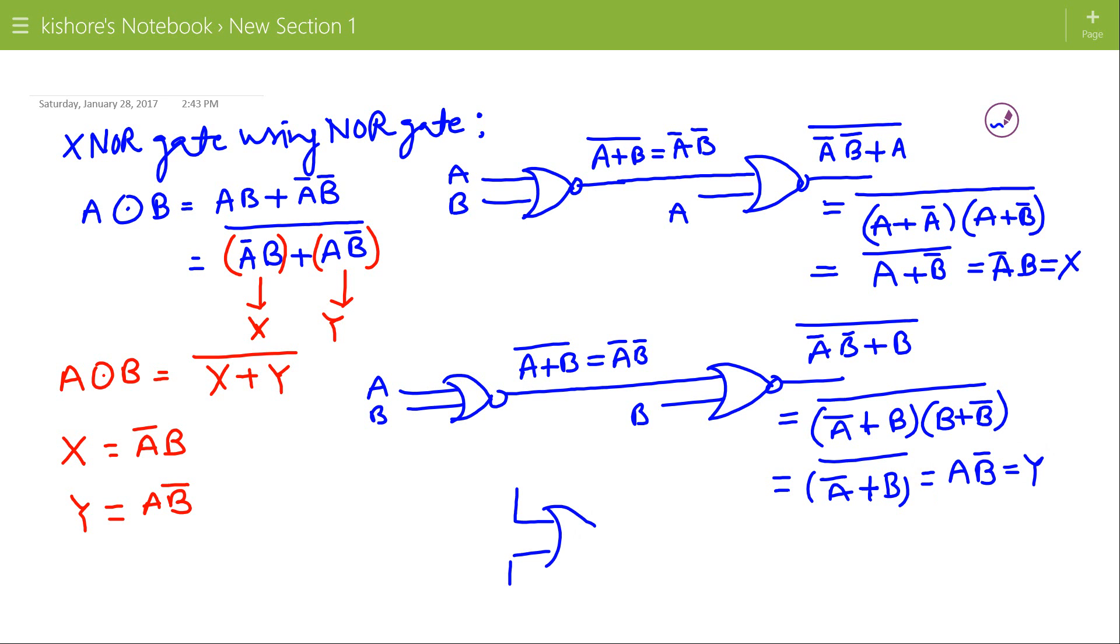If we use X and Y as input to one more NOR gate, this will give X plus Y bar, that is NOR of X and Y, and that is A XNOR B.